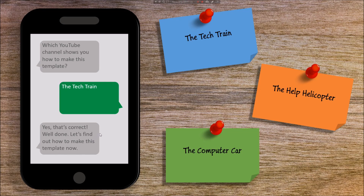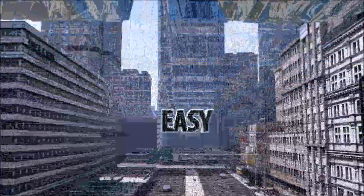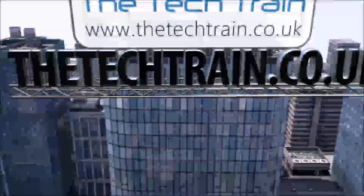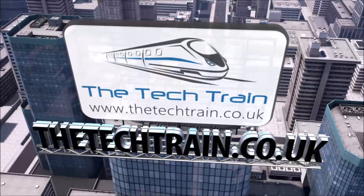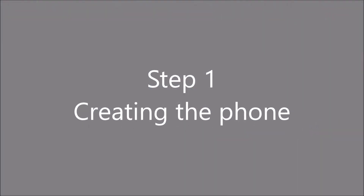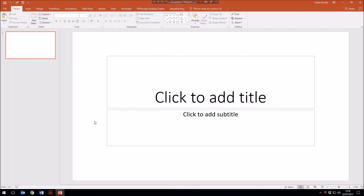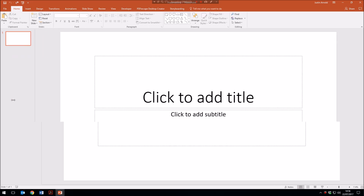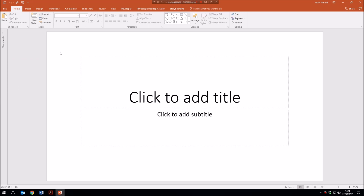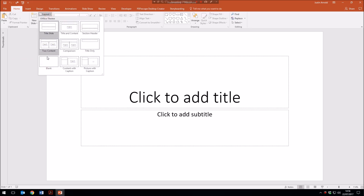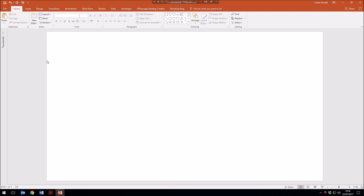So let's get started and see how to build this entire presentation including all the images from scratch. The first step is making the mobile phone image. I'm going to close up the thumbnails on the left and change the layout of this slide to blank, so I'm starting with a fresh blank slide.